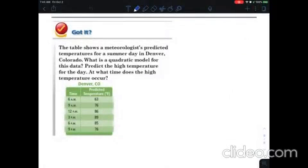I want to make sure I show you guys how to do this in case you don't have a TI calculator at home. Now if you do it's not quite as big of a deal but I did find a website. So this table shows temperatures for a day in Denver, Colorado. What is the quadratic model for this data? Predict the high temperature for the day and what time does that happen?